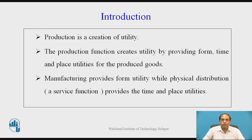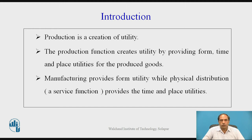Now, what is production? Production is a creation of utility. The production function creates utility by providing form, time, and place utilities for the produced goods. Manufacturing provides form utility, while physical distribution provides the time and place utility.